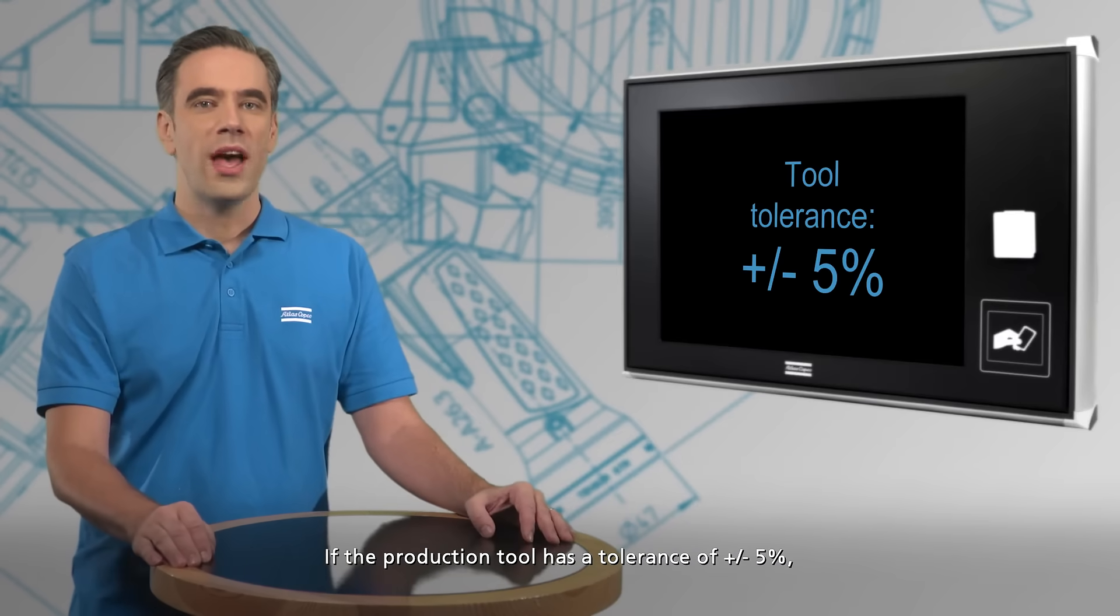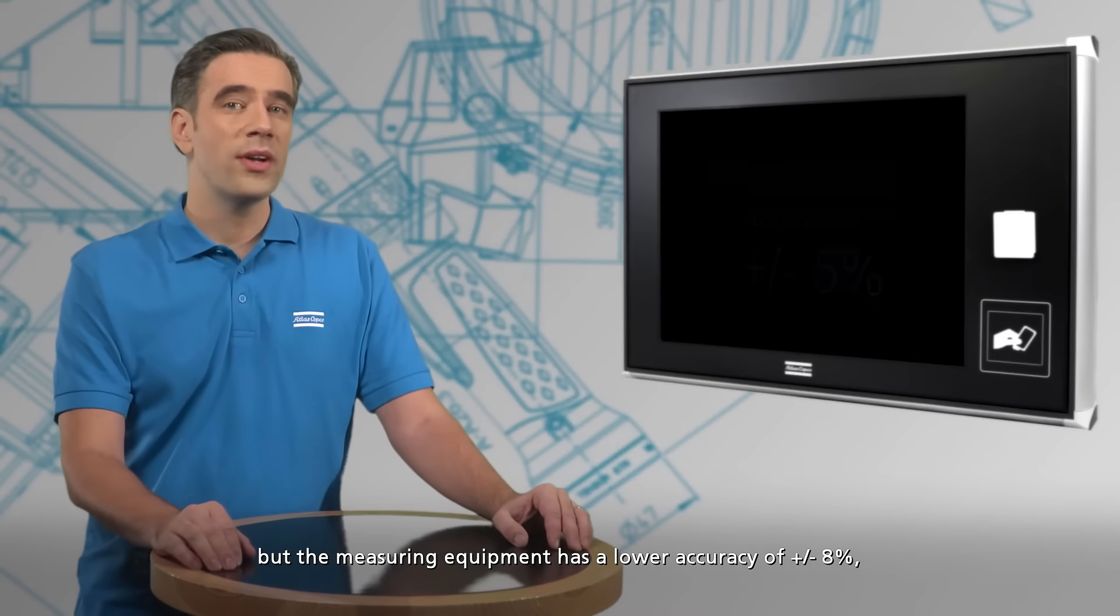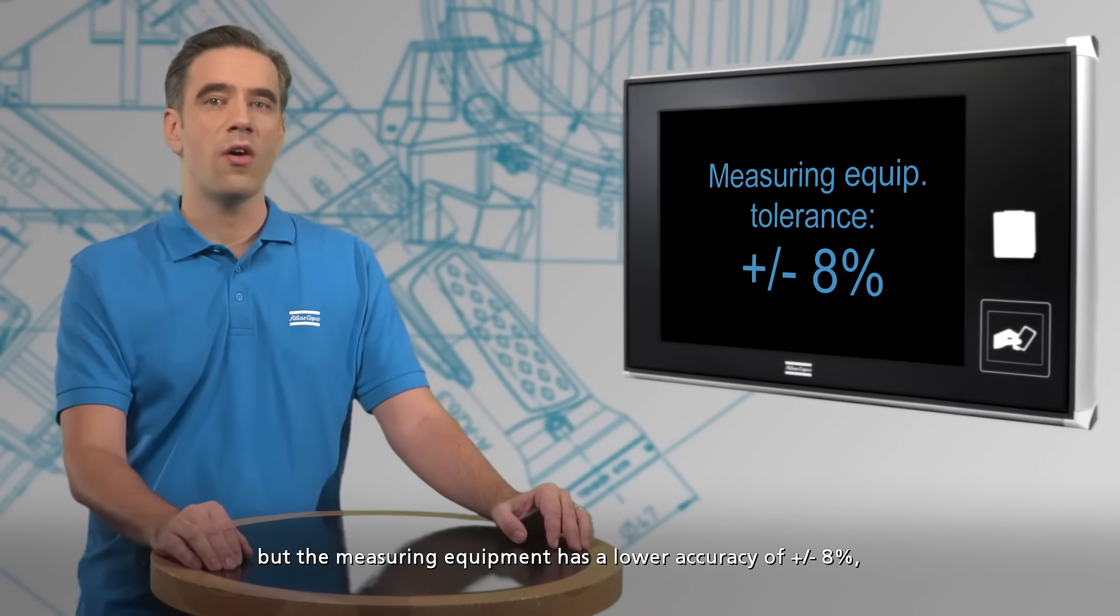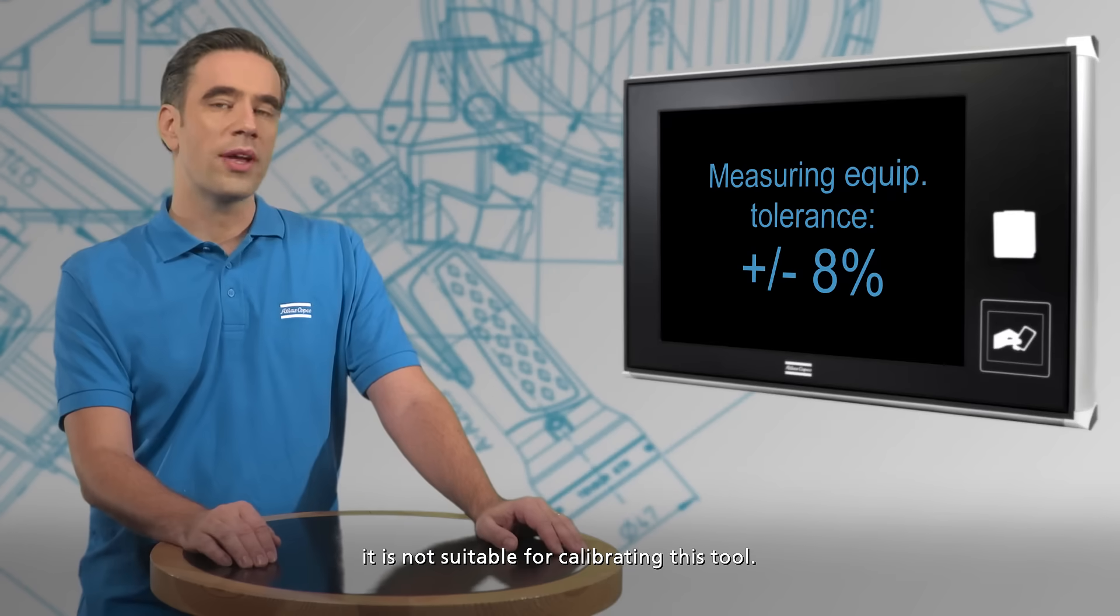If the production tool has a tolerance of +/- 5%, but the measuring equipment has a lower accuracy of +/- 8%, it is not suitable for calibrating this tool.